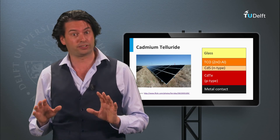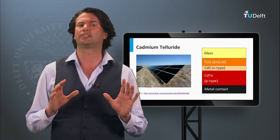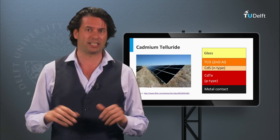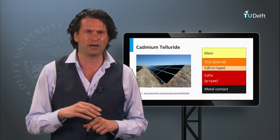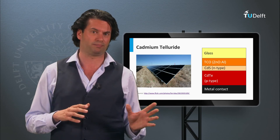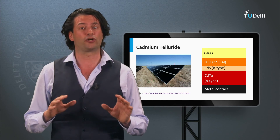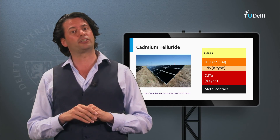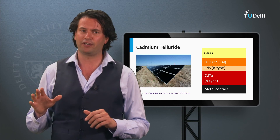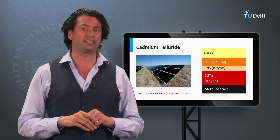An alternative thin film PV technology is based on a II-VI semiconductor: cadmium telluride. Cadmium telluride PV technology belongs to the second generation as well, and currently has the largest market share among the thin film PV technologies. We will discuss this technology in great detail in week 5.